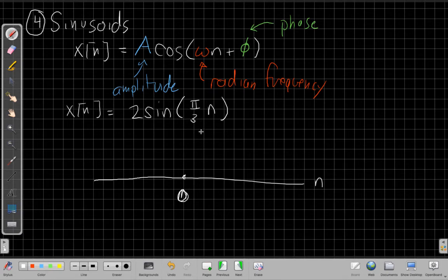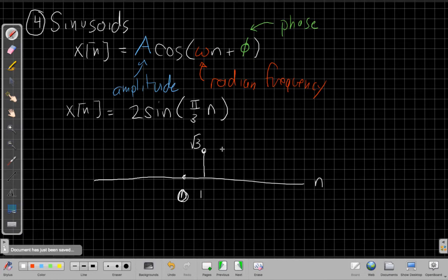When n equals 1, I have the sine of pi over 3, which is root 3 over 2, and then the two times that would make this root 3. So that would be, let's see, root 3 is something like not quite 1 and a half. Maybe we'll call it that. So this would be root 3 at n equals 1. And then at n equals 2, this would be 2 root 3, or 2 pi over 3, sine of 2 pi over 3, is also root 3.